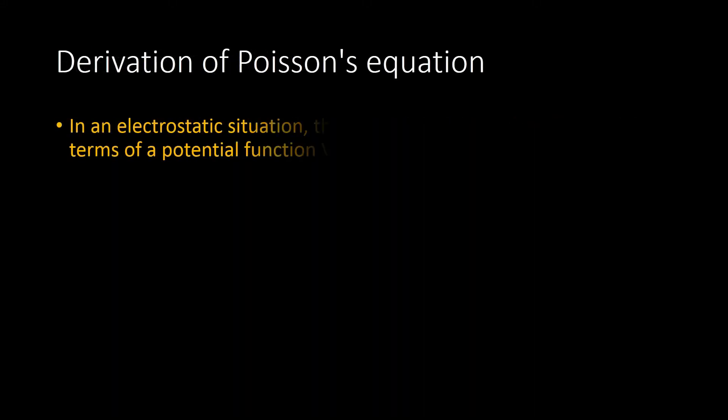Let's move on to the derivation. We know that E is a function of R which is an electric field and V is a function of R as a potential function. So we know that E is equal to minus del V.